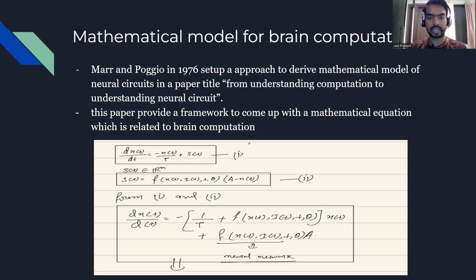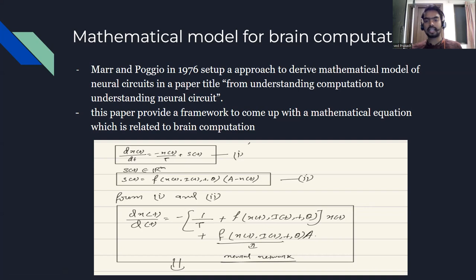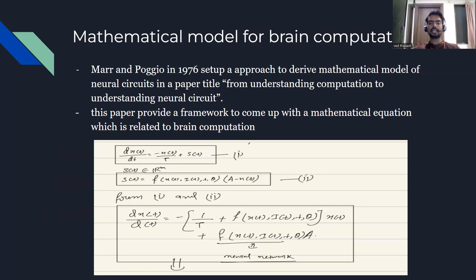The equation is dx/dt, which is basically how the dynamics of the system are changing with time. x(t) is the state of the system, and s(t) is basically the sum of the inputs the synapses are receiving. Mathematically, the activation function — which could be a sigmoid or tanh — is applied, and matrix A is coming from the input that all synapses are receiving. From these two components, we can derive the dynamics of the system.